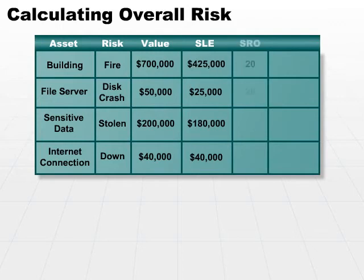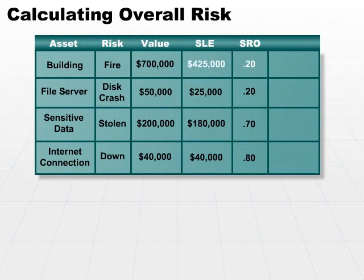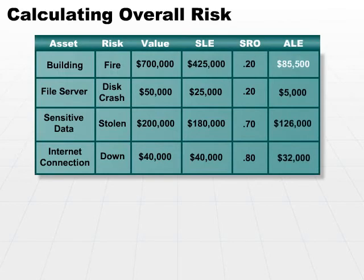How often is this expected to occur? Basically, we're going to expect our building will burn down once every five years. That means that annually, we have an annualized rate of occurrence of 20%. We take that 20%, multiply it by our single loss expectancy, and we end up with an annualized loss expectancy of $85,500.